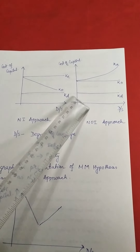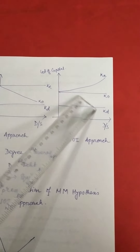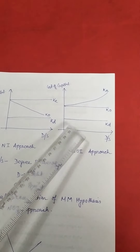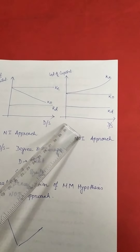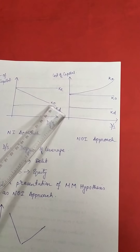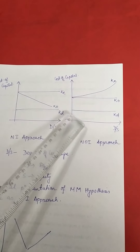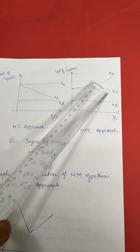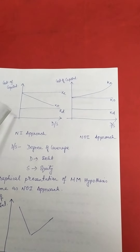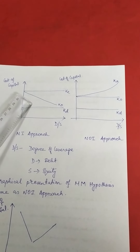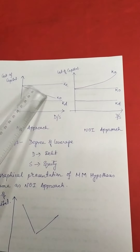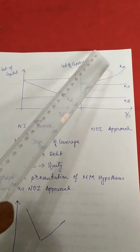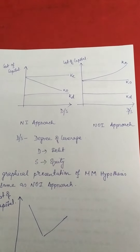Under the NOI approach, the cost of debt is constant. The graphical representation of the NOI approach and MM hypothesis is the same. In the NOI approach, the value of the firm is constant. In the MM hypothesis, the cost of capital is independent of its capital structure — cost of debt is constant, cost of capital is constant, and the cost of equity increases because the risk perception among equity holders increases.